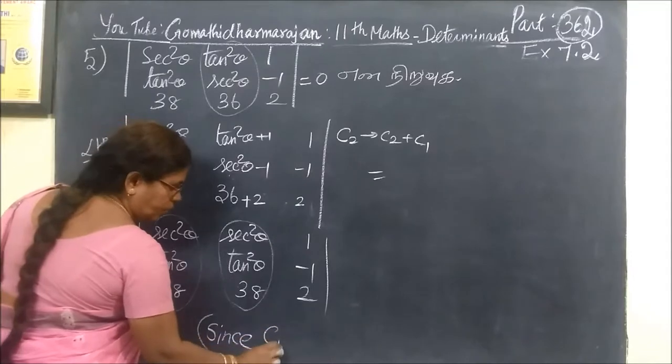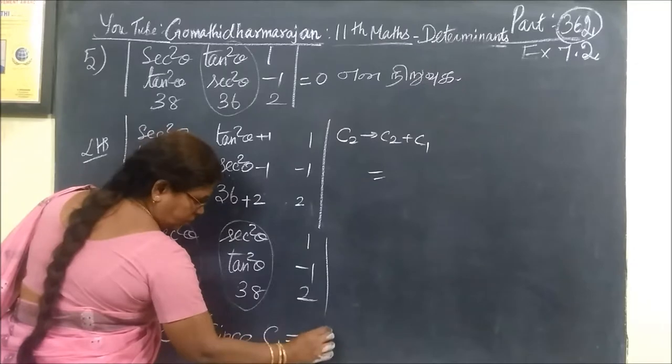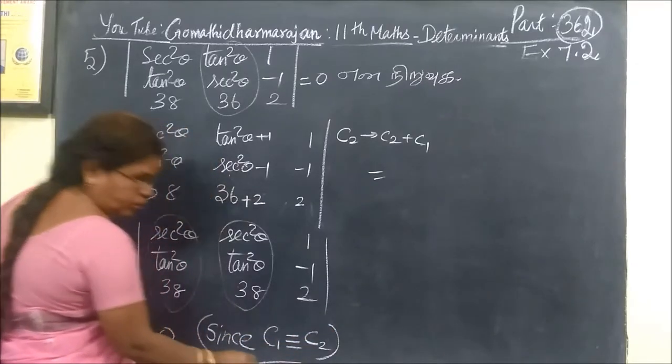Since C1 is equal to C2, C1 equal to C2 equal to 0.